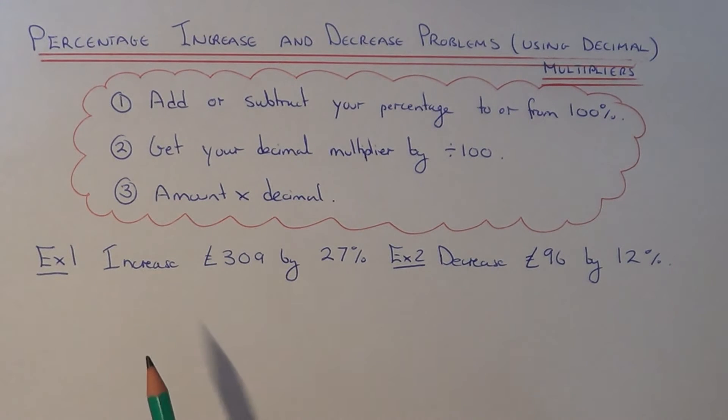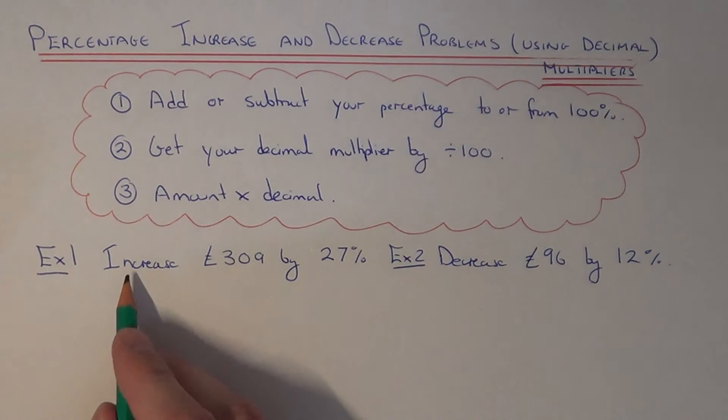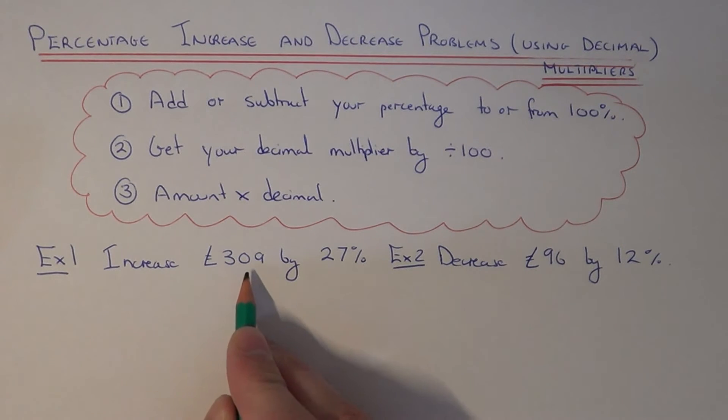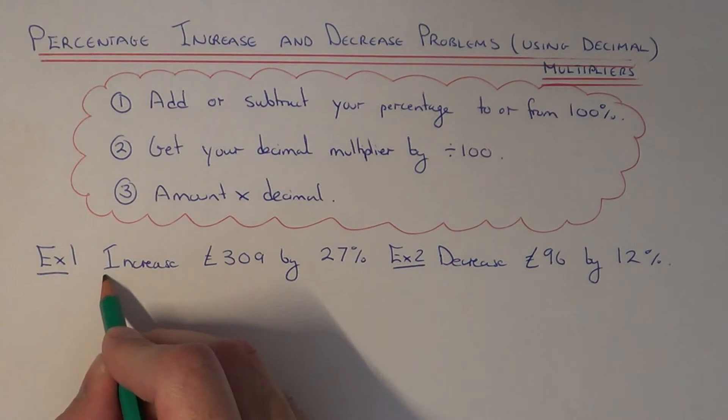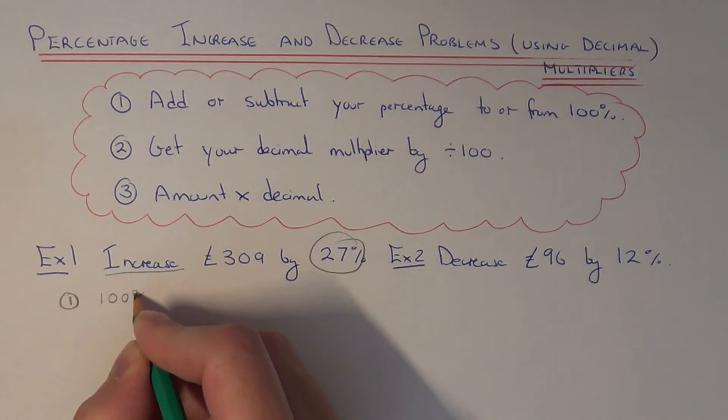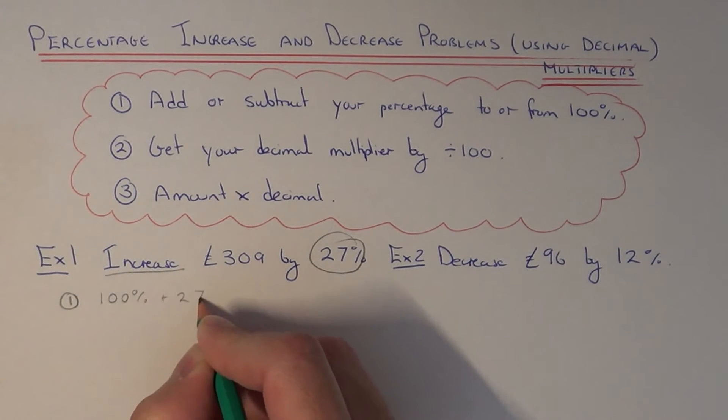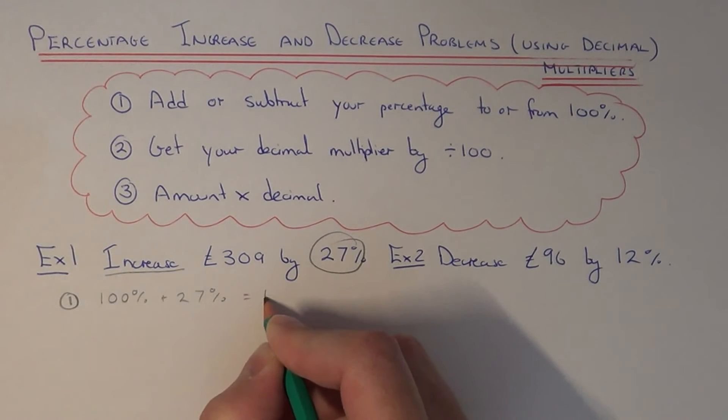So let's apply these three steps to the two examples here. Example one, we've got to increase £309 by 27%. Since we're doing a percentage increase, we need to add the percentage on to 100. So we do 100% plus 27% which is 127%.